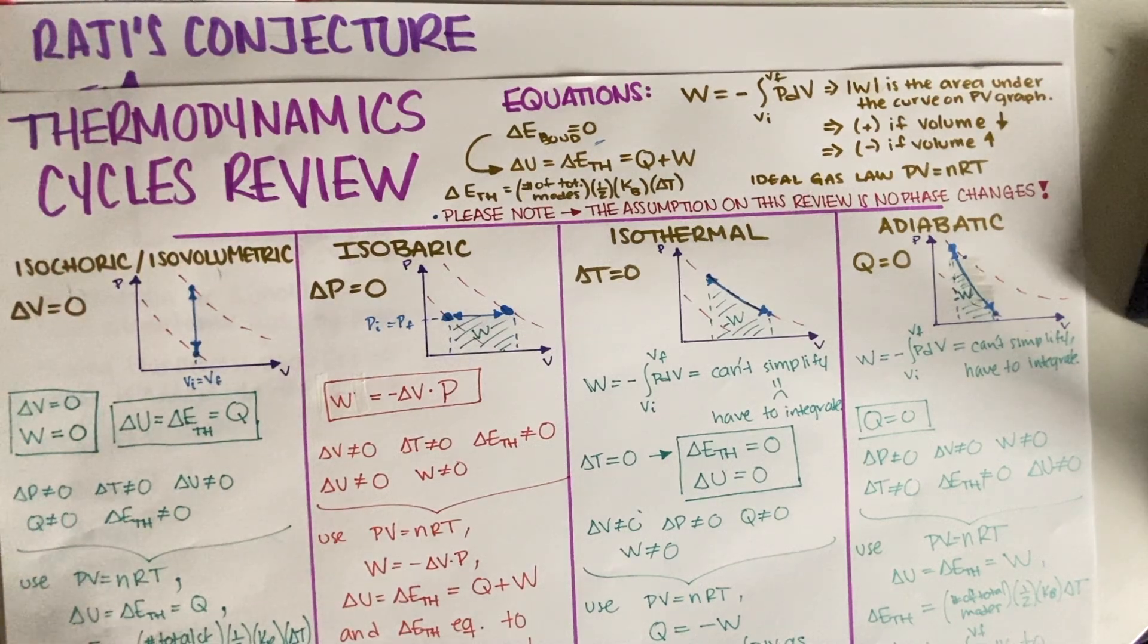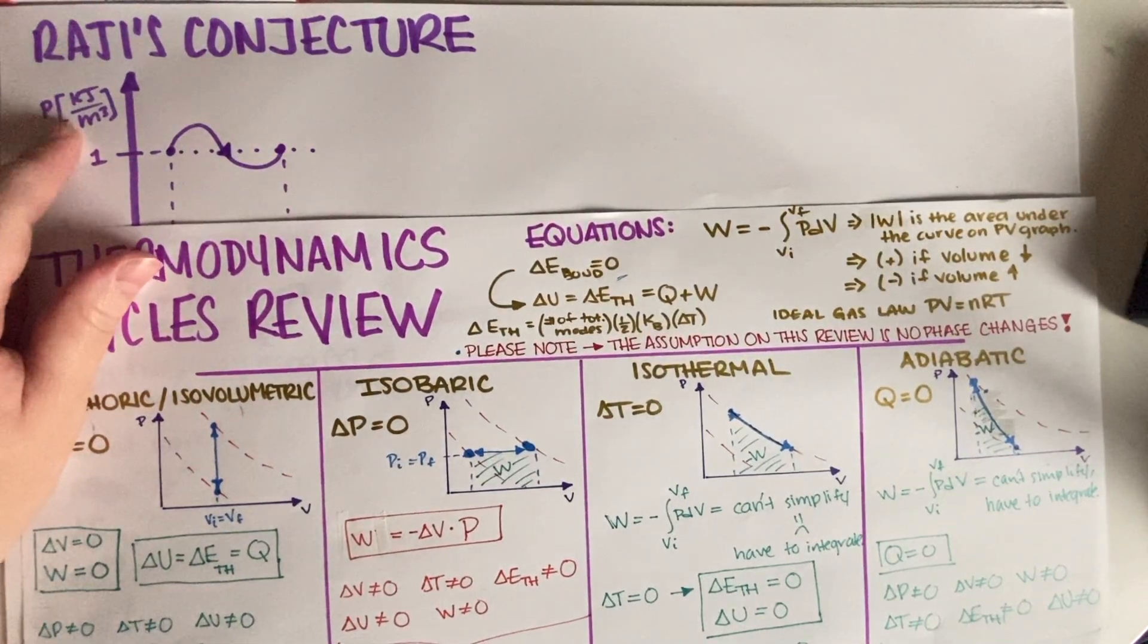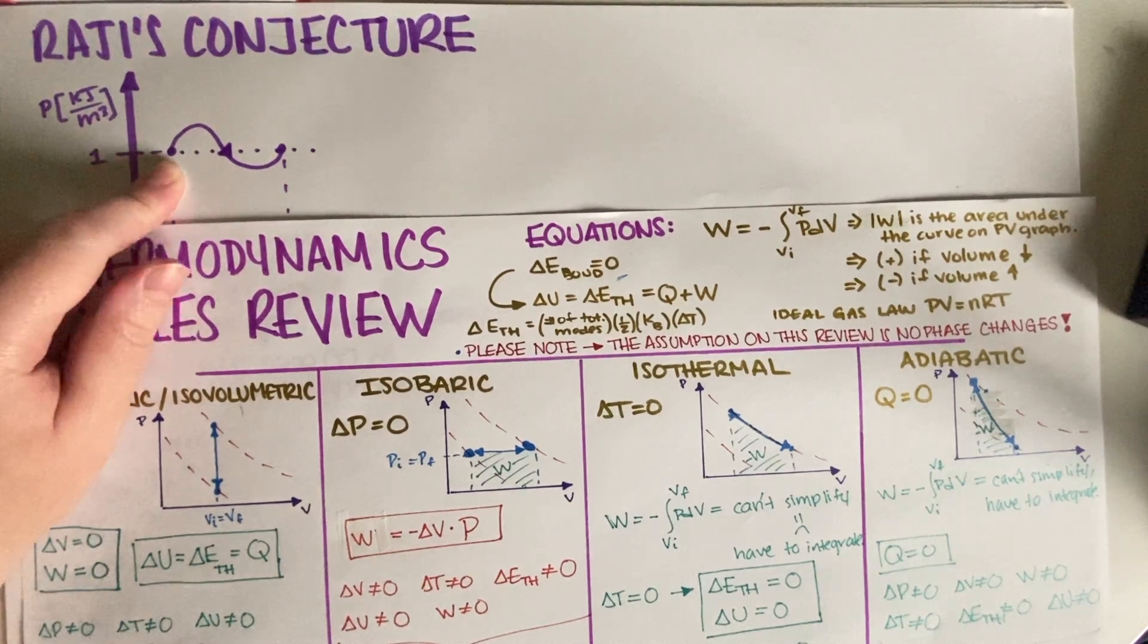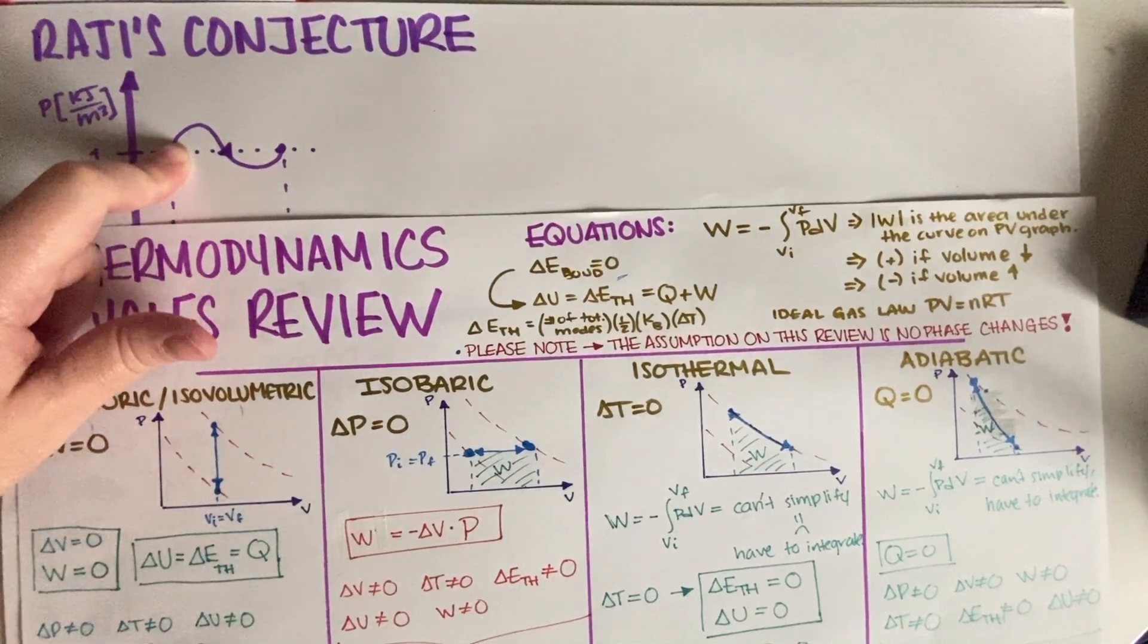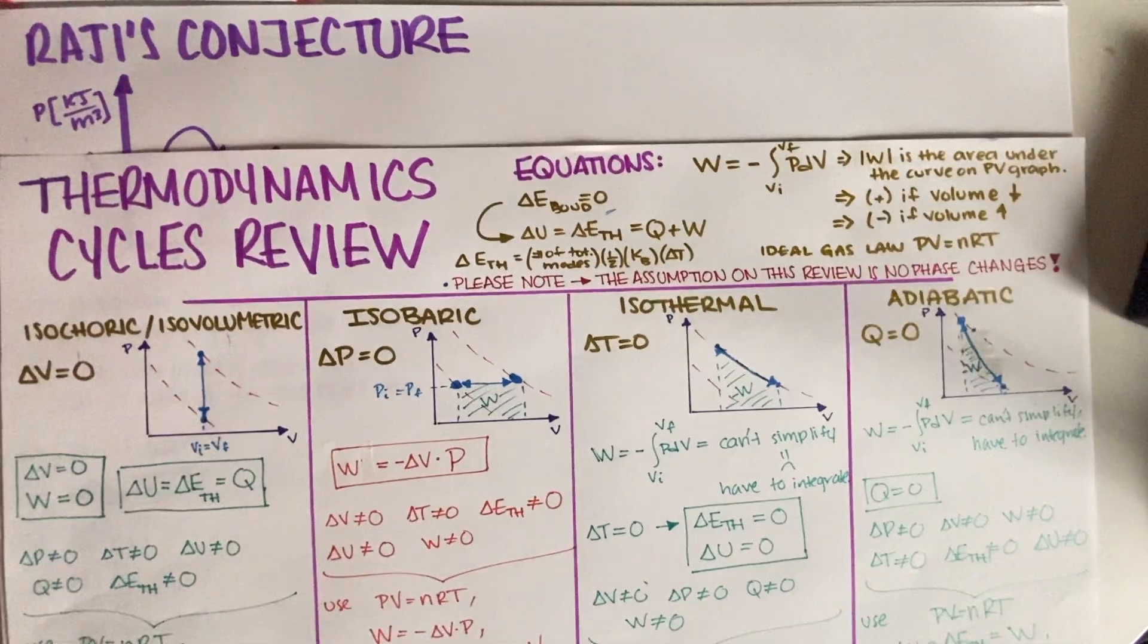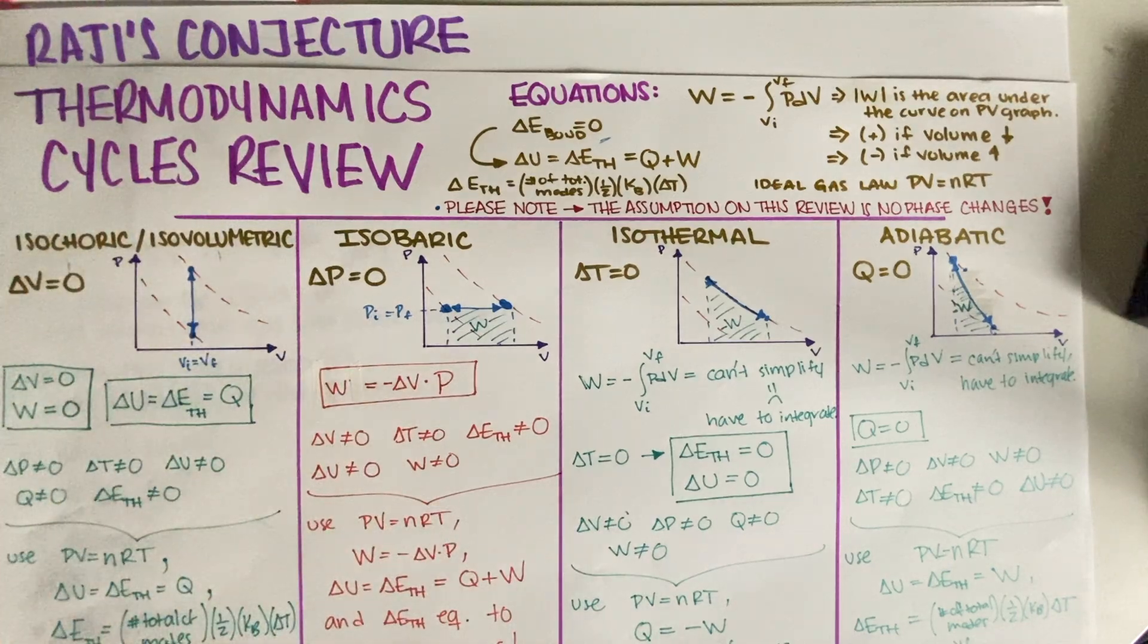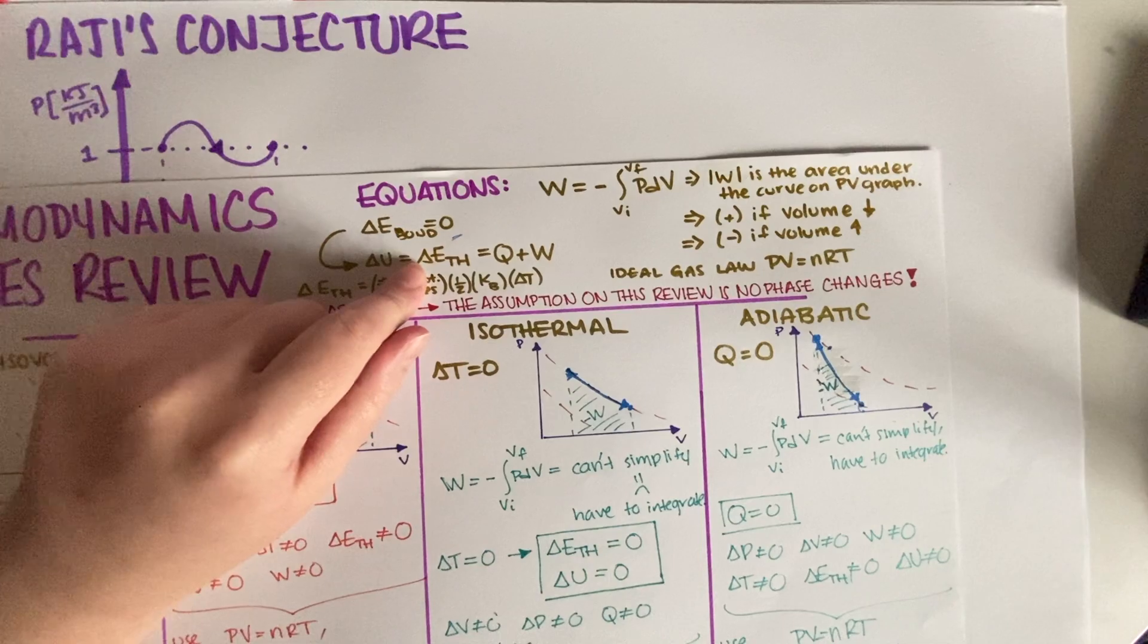So, pressure is not a state function. So, the path does matter, and in this case, even though delta P is equal to zero, and it might seem like this is isobaric, the pressure wasn't kept constant as we did the process, which means that this is not isobaric. And then, it's also not anything else. So, any of the simplifications that we have right here, we unfortunately cannot use. We're going to have to use the equations as such.